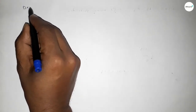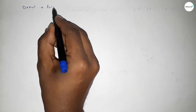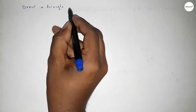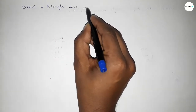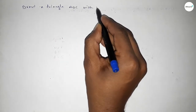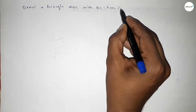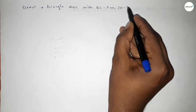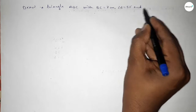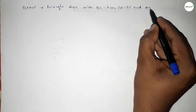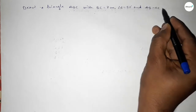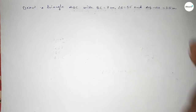Hi everyone, welcome to SI Share Classes. Today in this video we have to draw a triangle ABC with BC equal to 7 centimeters, angle B equal to 50 degrees, and AB minus AC equal to 3.5 centimeters. So let's start the video.